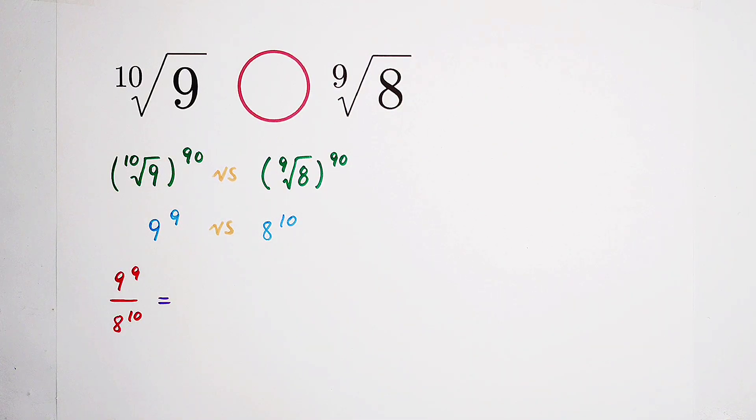Clearly, we want them to have the same base or the same exponent. However, the same base, impossible. The same exponent, maybe it is possible. Why? Because we can write this 8 to the power of 10 as 8 to the power of 9, then times 8.